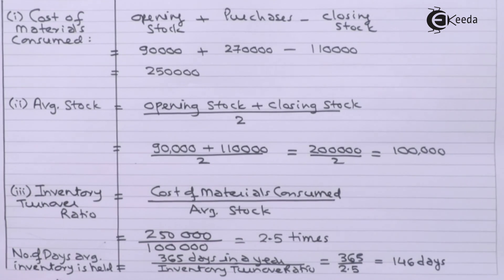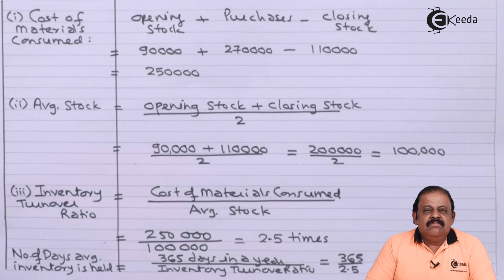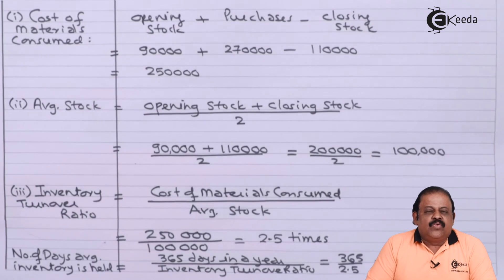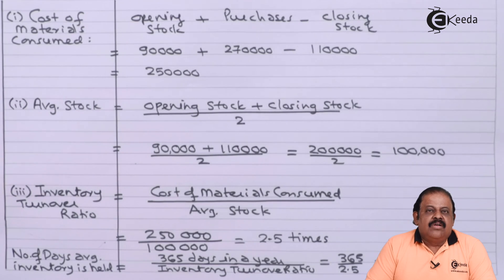The number of days average inventory is held comes to 146 days. So in this question we have understood how to calculate inventory turnover ratio and number of days inventory held, and the basic concept relating to different types of stocks: fast moving stock, slow moving stock, dormant stock, and obsolete stock.